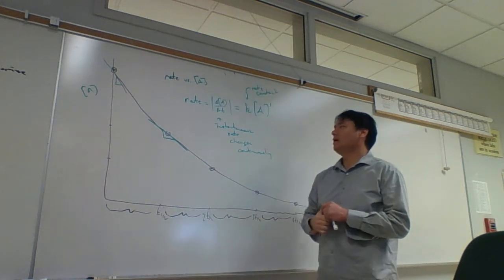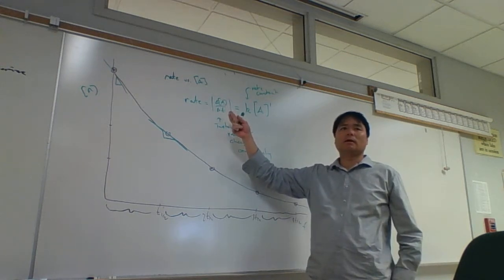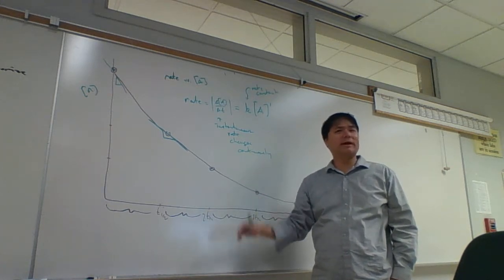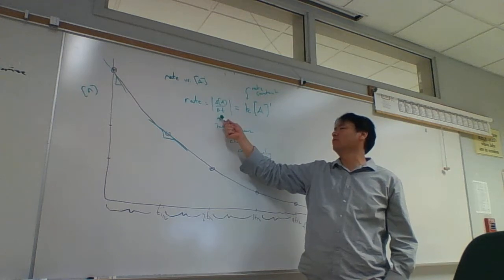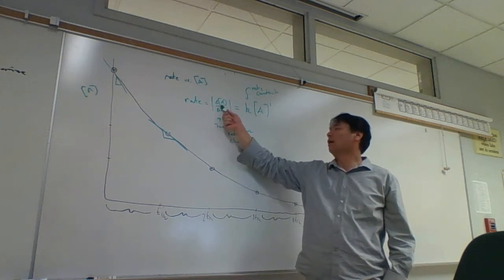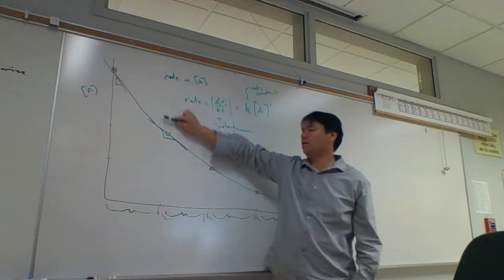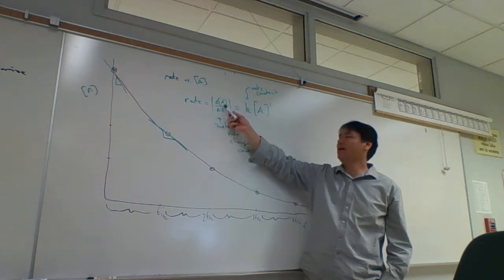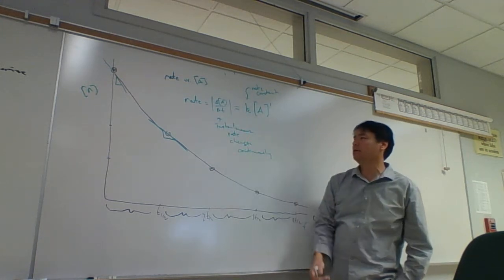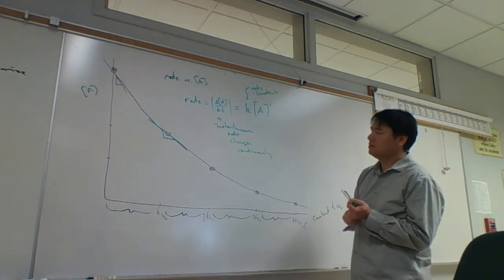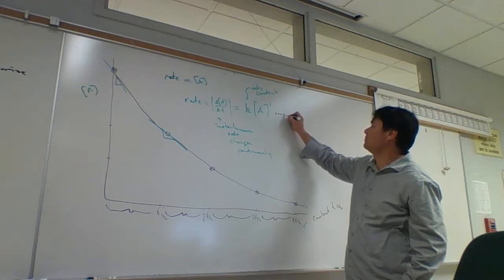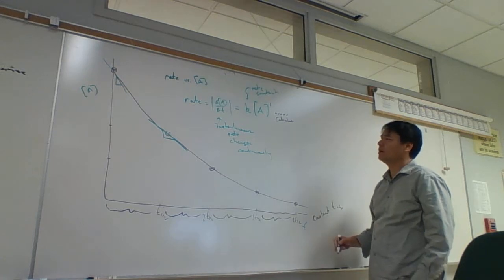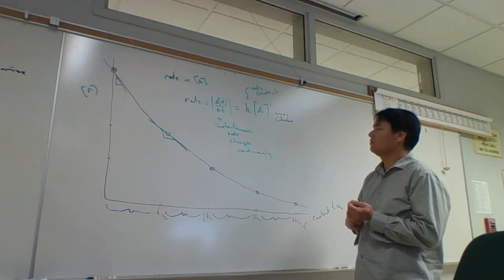We can't use this rate to make predictions — we can't say how long it takes for a drop of delta A because this is always changing. So what we've got to do is some calculus. The calculus is not required for this class, but we'll do some calculus to get the equations. You don't need to worry about the calculus — you just have to remember the equations.